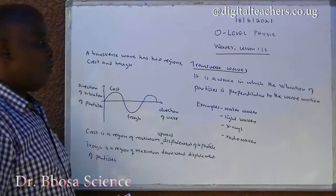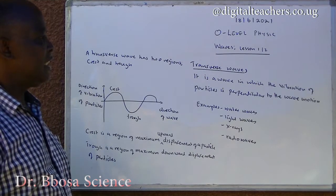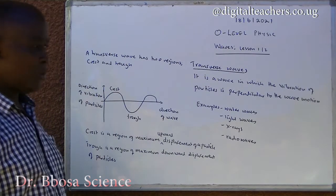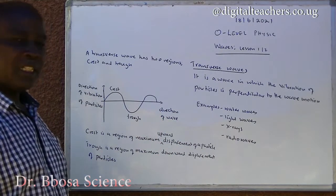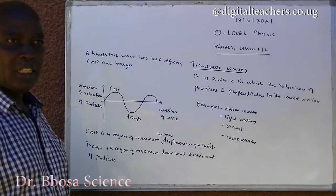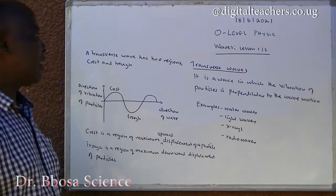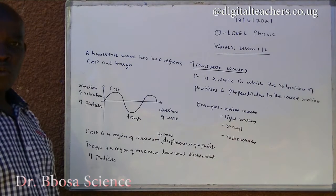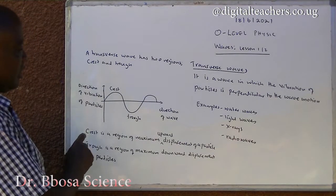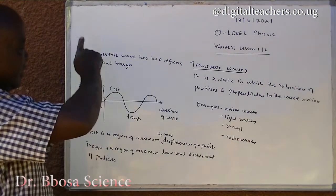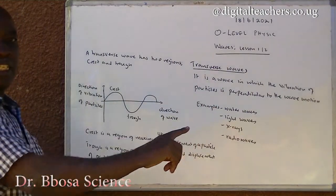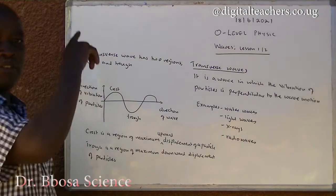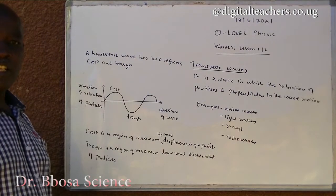Transverse waves. A transverse wave is a wave in which the vibration of particles is perpendicular to the wave motion. Examples: water waves, light waves, x-rays, radio waves and all electromagnetic waves. A transverse wave has three regions: crest and trough as shown in the diagram. This is the direction of vibration of particles and this one is the direction of the waves. In transverse waves, particles vibrate perpendicular to the direction of the wave.